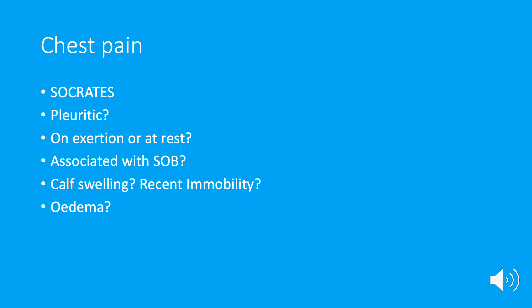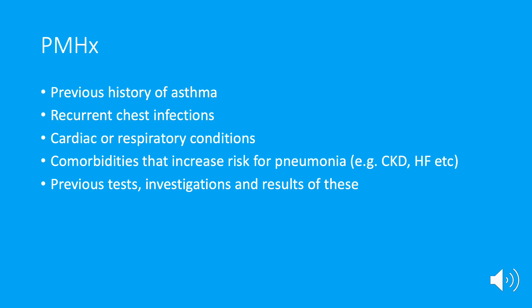Is the chest pain happening on exertion or at rest? Chest pain on exertion raises concern — could this be angina or cardiac-related? Is it more of a chest tightness, which fits more with COPD or asthma? If it's pleuritic chest pain associated with shortness of breath, that increases our worry about PE or pneumothorax. If thinking PE, do a quick assessment for risk factors: is there calf swelling? Have they been recently immobile, taken a long flight, or have a history of DVT or PE?